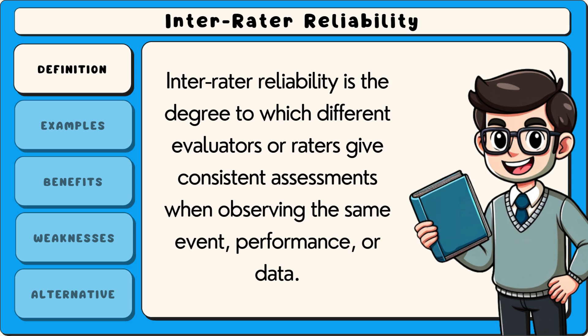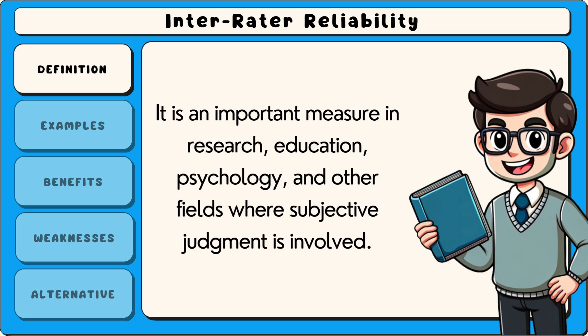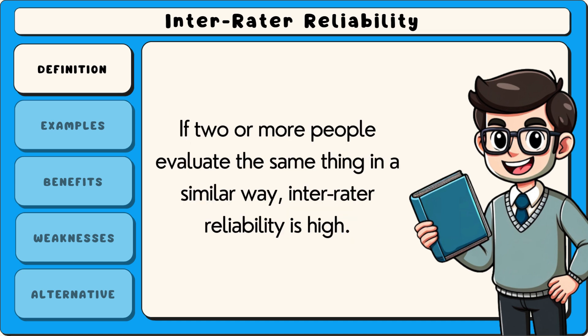Inter-rater reliability is the degree to which different evaluators or raters give consistent assessments when observing the same event, performance or data. It is an important measure in research, education, psychology and other fields where subjective judgment is involved. If two or more people evaluate the same thing in a similar way, inter-rater reliability is high.